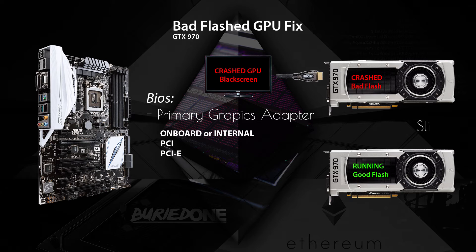First, I want to talk about the BIOS. In your computer you have three options most of the time: onboard or internal, PCI, or PCIe. Onboard graphics means it's coming from the motherboard, so you plug your HDMI into the motherboard. PCIe means it's going to select the first GPU.